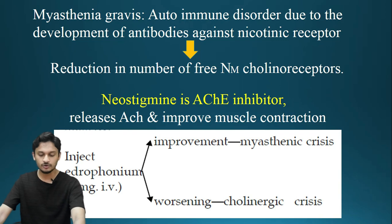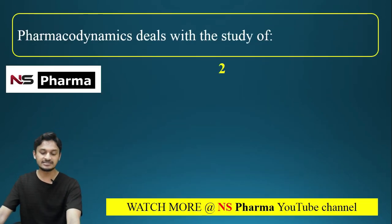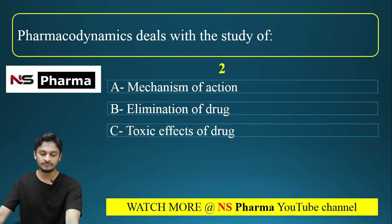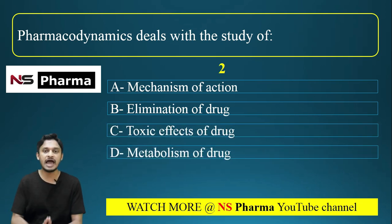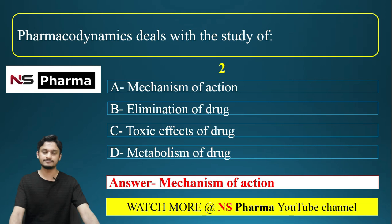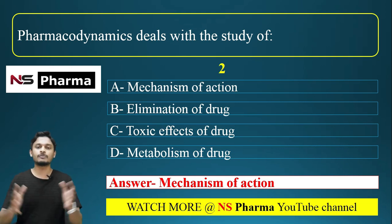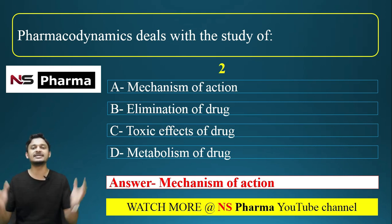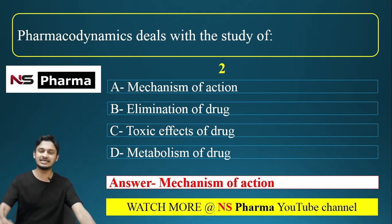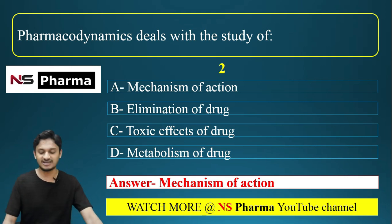Question number two: Pharmacodynamics deals with the study of — Option A, mechanism of action; Option B, elimination of drug; Option C, toxic effect of drug; Option D, metabolism of drug. The correct answer is Option A, mechanism of action of drug. Pharmacokinetics deals with ADME — absorption, distribution, metabolism, and excretion of the drug.